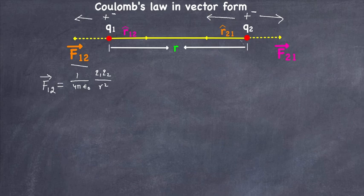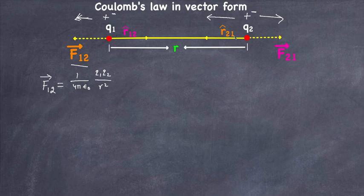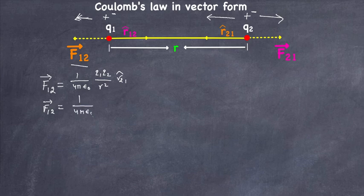The force is moving in this direction. As we all know it's a central force, that's why I made a line — a straight line going through the centers of the charges. We're going to represent this direction by unit vector r̂21, meaning force directed from charge q2 towards charge q1. So F12 equals 1 over 4 pi epsilon naught times q1 q2 over r squared times r̂21.